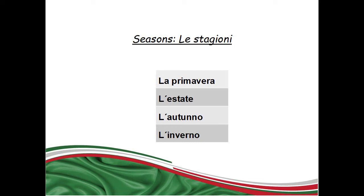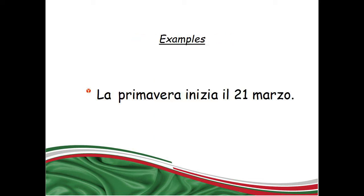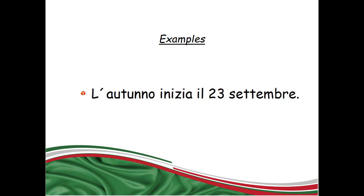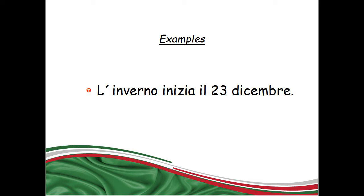Let's see some examples. La primavera inizia il 21 marzo — The spring starts on the 21st of March. L'estate inizia il 22 giugno — The summer starts on the 22nd of June. L'autunno inizia il 23 settembre — The autumn starts on the 23rd of September. L'inverno inizia il 23 dicembre — The winter starts on the 23rd of December.